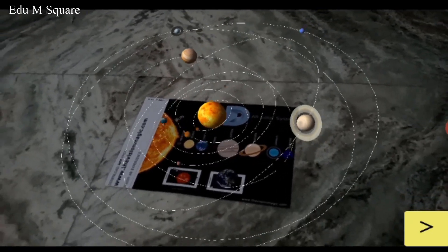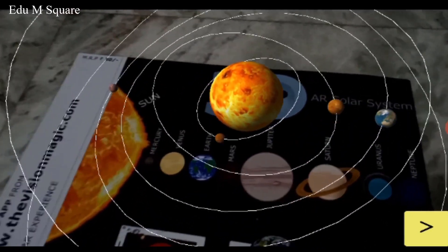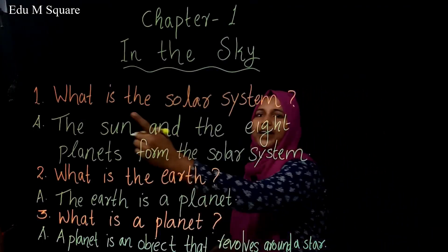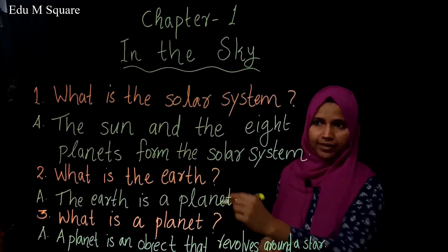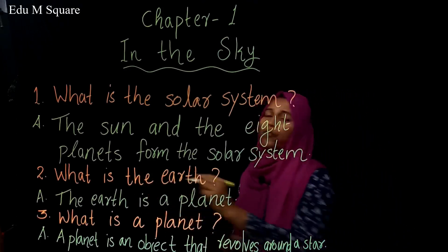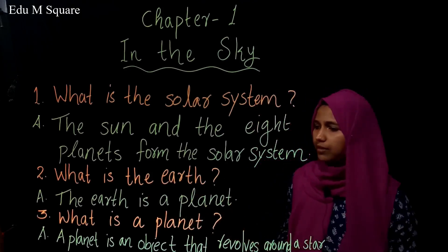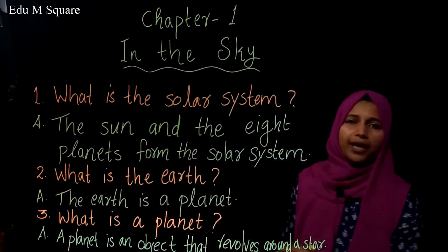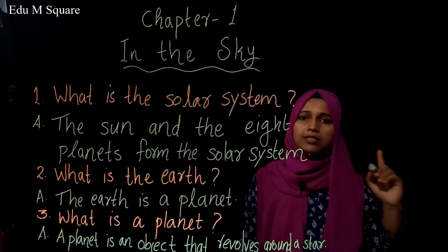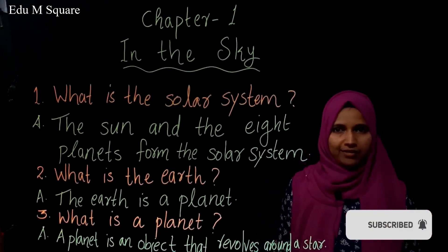Look, what amazing facts are happening in the solar system! Students, today we learned: what is the solar system? The sun and the 8 planets form the solar system. Then what is the earth? The earth is a planet. Then we studied: what is a planet? A planet is an object that revolves around a star. So let's conclude. Hope all of you understood well. Thank you.